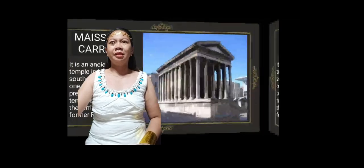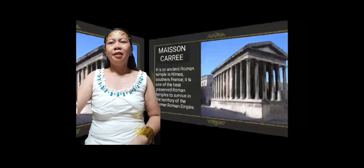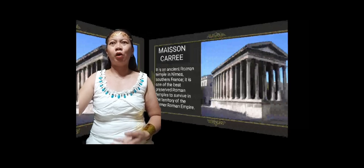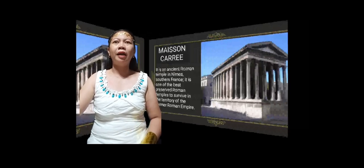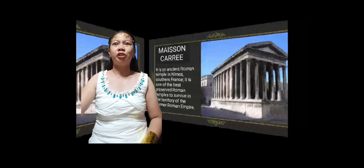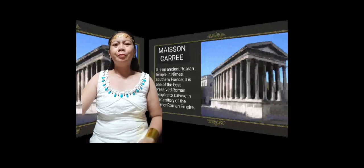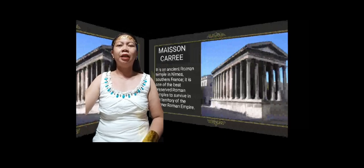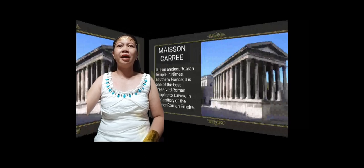Another example is the Maison Carrée. The Maison Carrée is an ancient Roman temple in Nîmes, southern France. It is one of the best-preserved Roman temples to survive in the territory of the former Roman Empire. Also known as the 'square house,' it is an extremely well-preserved ancient Roman building and represents an early textbook example of a Roman temple as described by the architectural writer Vitruvius.